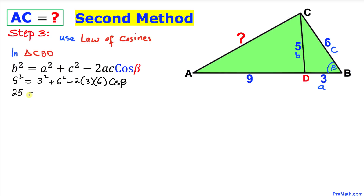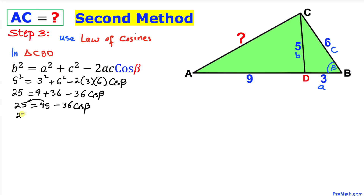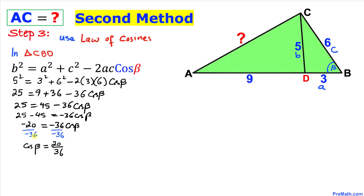Simplifying: 25 = 9 + 36 − 36·cos(β), which gives us 25 = 45 − 36·cos(β). Moving 45 to the other side: 25 − 45 = −36·cos(β), so −20 = −36·cos(β). Dividing both sides by −36 to isolate cos(β), we get cos(β) = 20/36, which reduces to 5/9.